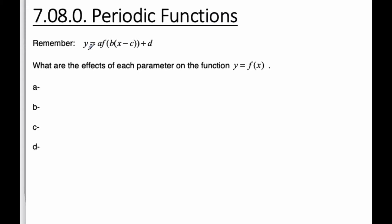We haven't looked at them for a while. So we have y is equal to a, f of b, x minus c, plus d. And so each of these variables, a, b, c, and d, all tell us something that's a transformation.